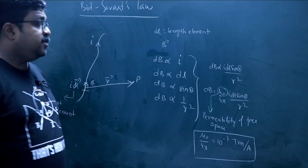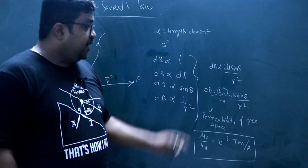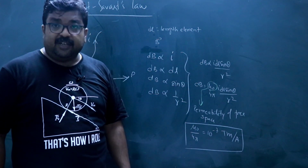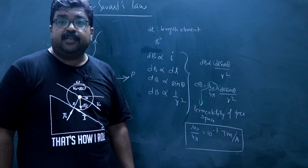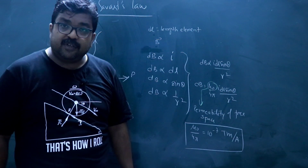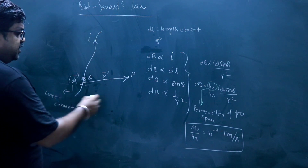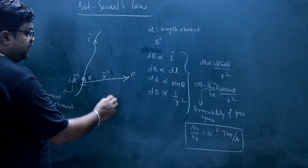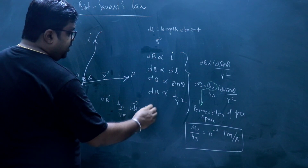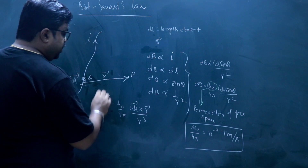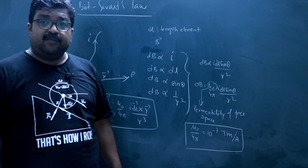This is the fundamental concept of Biot-Savart's law and how we express it in scalar form. Now let us write this expression in vector form, because we have only obtained the magnitude of the magnetic field. We also need to express it in vector form to get the direction. So the expression i·dl·sinθ in vector form becomes: dB⃗ = μ₀/4π · (i·dl⃗ × r⃗) / r³. This is how Biot-Savart's law is expressed in vector form.